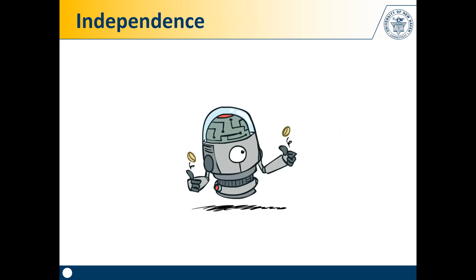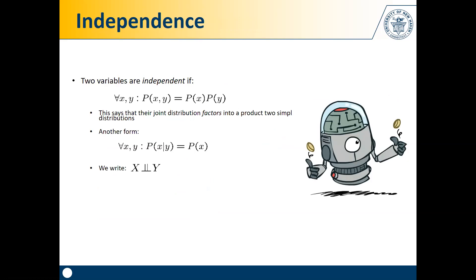I need to introduce a new concept in probabilistic reasoning: independence. Two random variables are called independent if, for each assignment of those variables, the joint probability of those assignments equals the product of the individual probabilities of those assignments. So the probability of X and Y happening at the same time is just the probability of X multiplied by the probability of Y. This says that their joint distribution factors into a product of two simpler distributions.